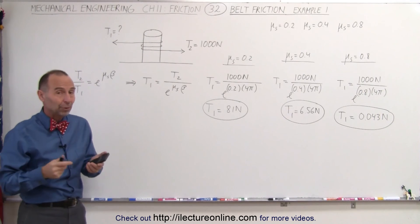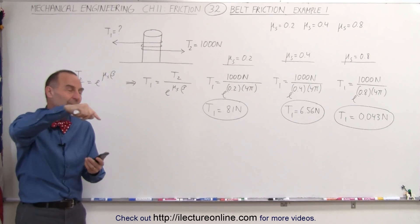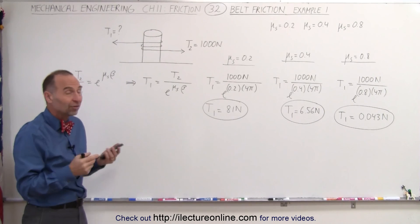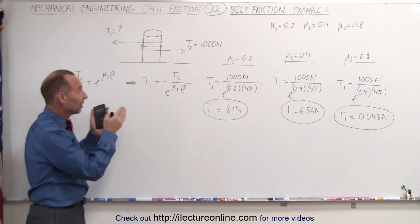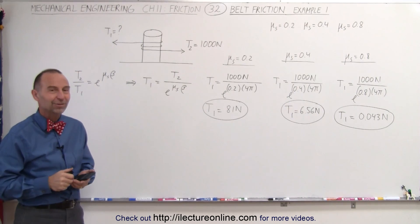So now in the next example we're going to do something similar but now we're going to change the number of times we wrap the rope around the post to see how that affects how much tension you need to keep your rope from slipping. That's how it's done.